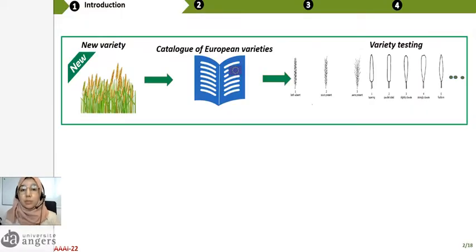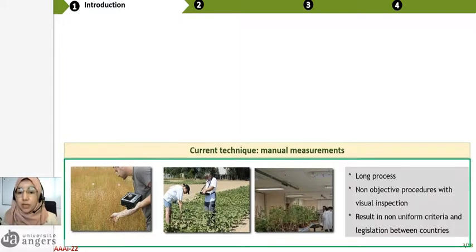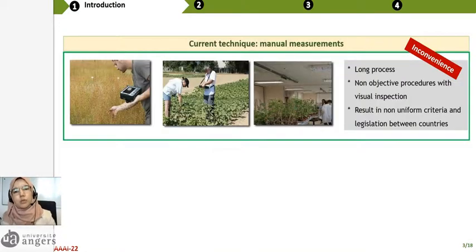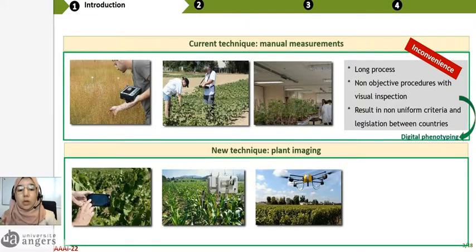To commercialize a new variety in agriculture, this variety must pass several tests. The current technique to implement this test is manual measurement, but this process is very long. Also, it is a non-objective procedure with visual inspection, and the results are non-uniform criteria and registration between countries.